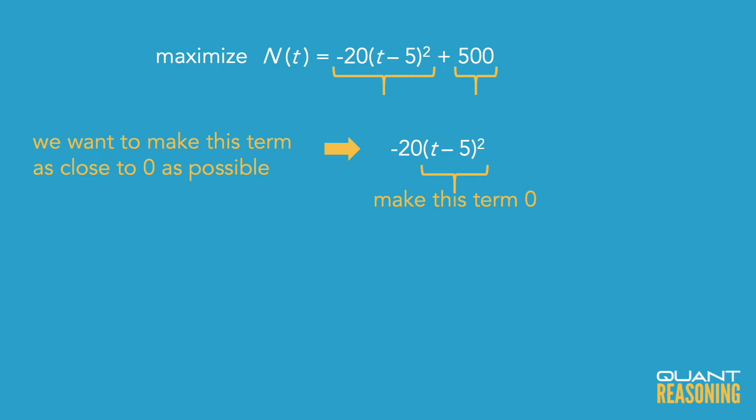Because it certainly can't be positive, but if it could be zero, that would be the way to maximize the entire expression. It would end up being zero plus 500 equals 500.